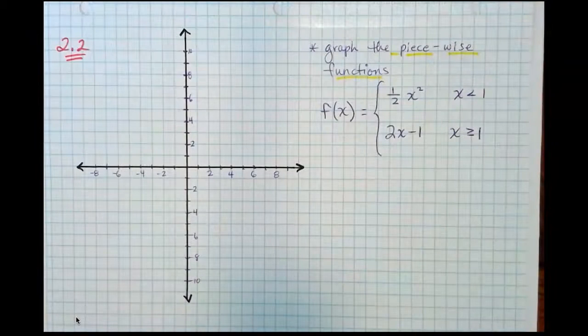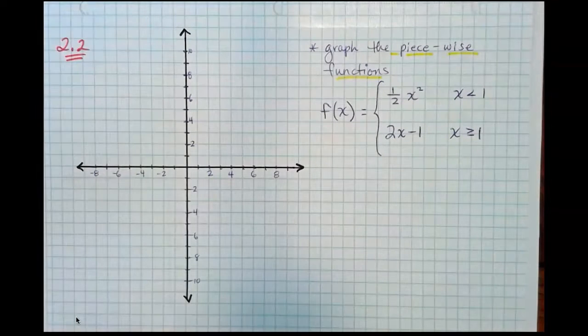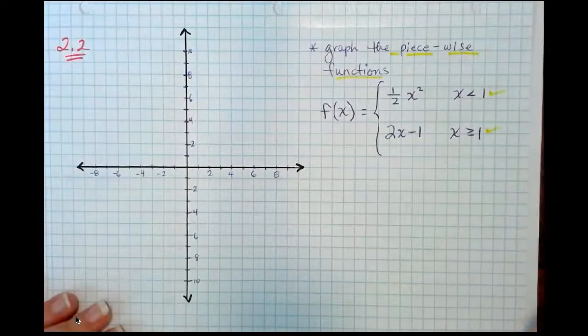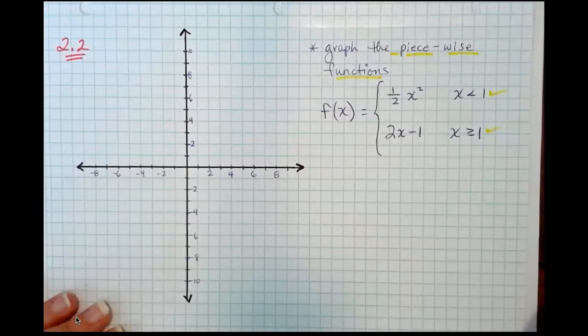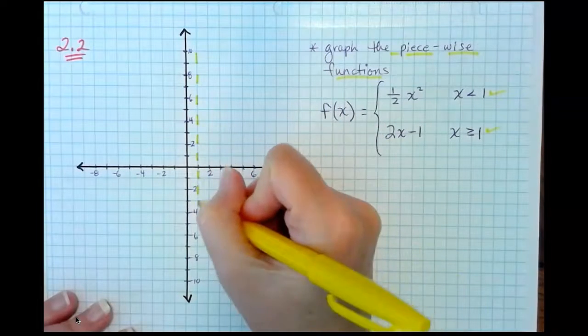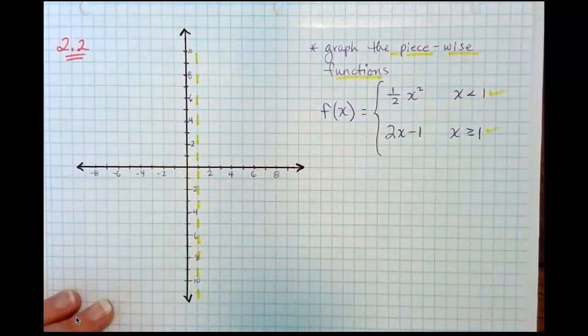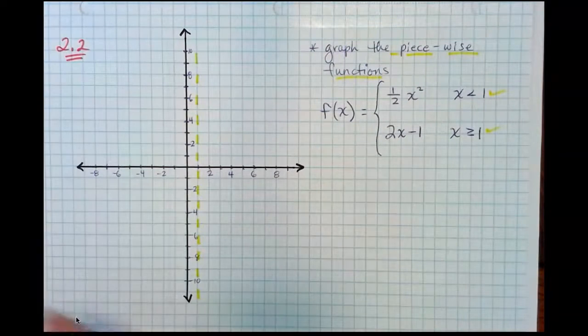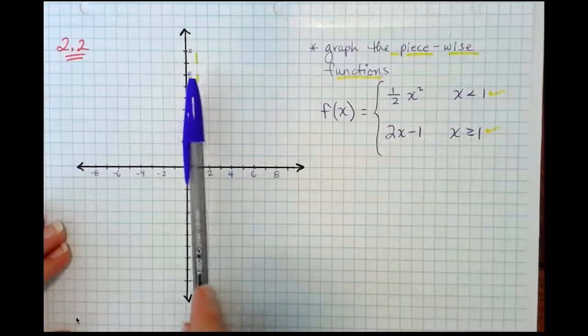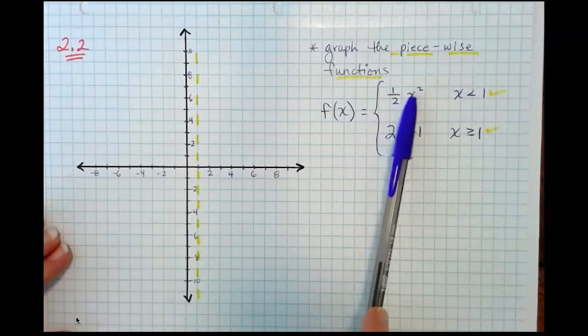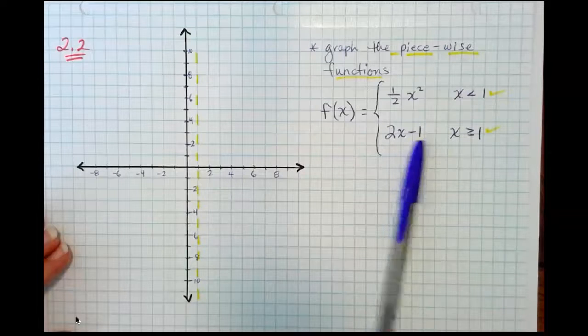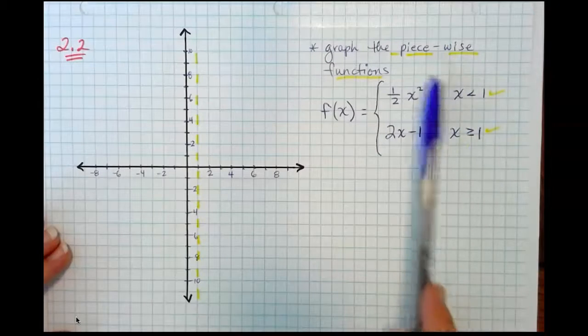So the first thing that I like to do when graphing a piecewise function is draw a line, an auxiliary line of demarcation, where the action is going to happen. And all the action is going to happen at x equals 1. So I'm going to draw in an auxiliary line. And an auxiliary line is auxiliary because it's not actually part of the graph, which is why I always draw it dashed. So what that auxiliary line is telling me is that since the action is happening at x equals 1, to the left of our auxiliary line, I'm going to be using the first function. To the right of our auxiliary line, I'll be using the second function because we have split the domain into two pieces.